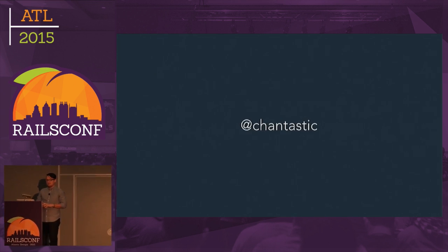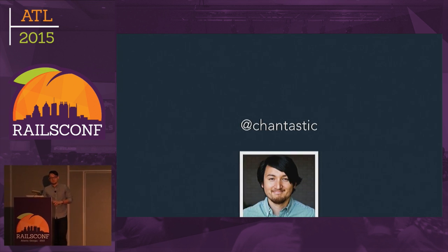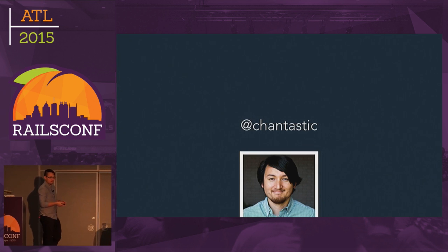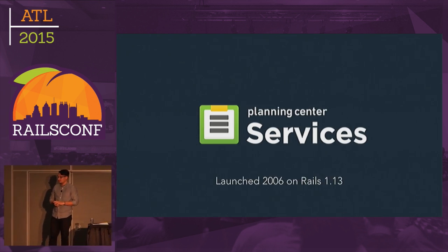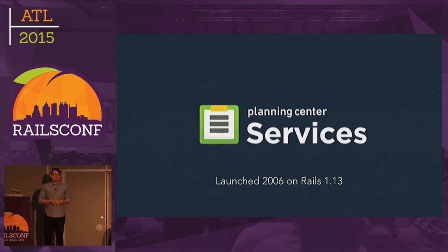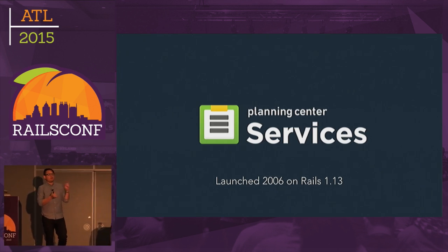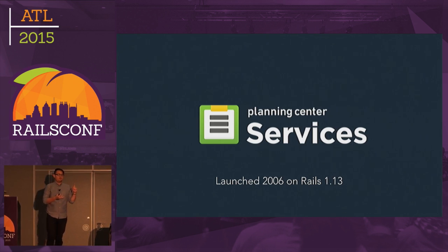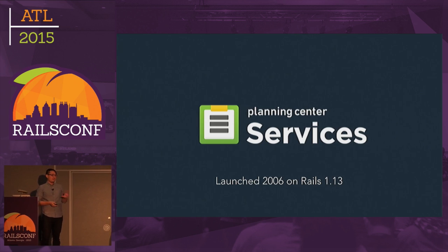My name is Michael Chan, go by Chantastic on Twitter, and there's a much younger happy version of me you might find there. I work on an application called Services. It was launched in 2006 and started on Rails 1.13. Services is an application for churches — it helps churches organize volunteers. There are timelines, services, all that kind of stuff. And believe it or not, there is actually a market for church software.